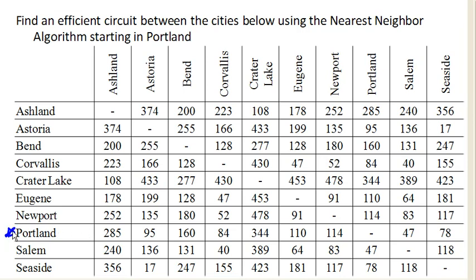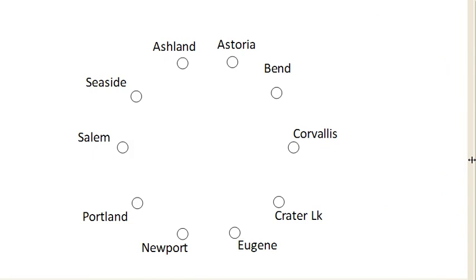Starting in Portland, we look and say: what is our cheapest destination, the quickest place we can go to? Because remember, with the nearest neighbor algorithm, we always go to the nearest location. And so that is 47 miles, going from Portland to Salem.